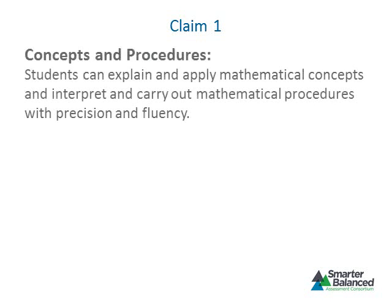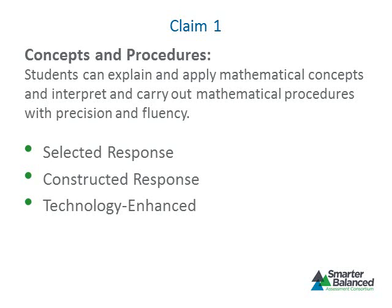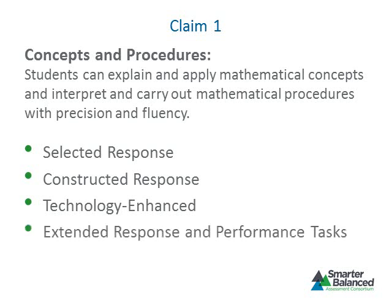Smarter Balanced has defined four claims for mathematics. Claim 1 focuses on concepts and procedures and requires students to explain and apply mathematical concepts and interpret and carry out mathematical procedures with precision and fluency. The focus is on content knowledge learned at the high school level. A variety of item types are used to collect evidence for Claim 1, including selected response, constructed response, and technology-enhanced items and tasks that focus on a particular skill or concept. Content for this claim may also be evaluated at a deeper level with extended response items and performance tasks, with a direct connection to the conceptual categories defined in the Common Core State Standards for mathematics.